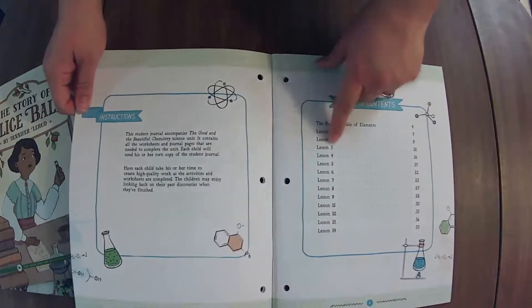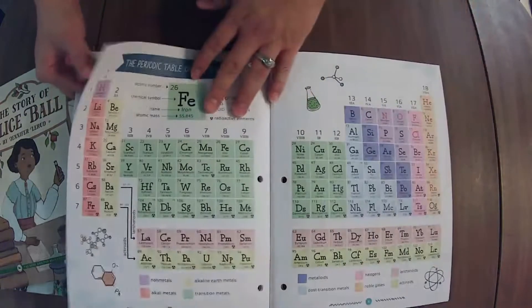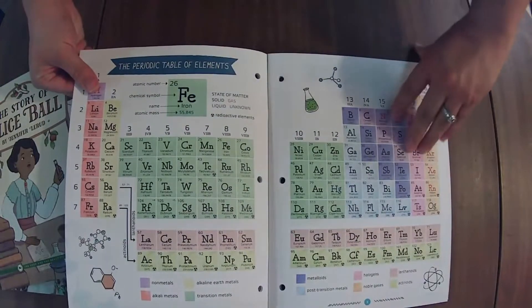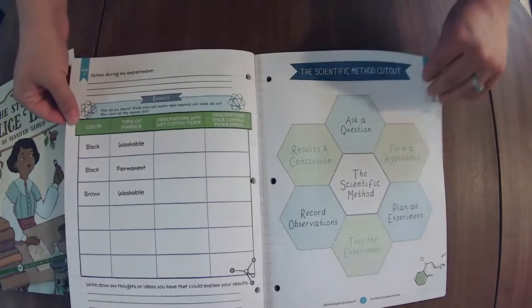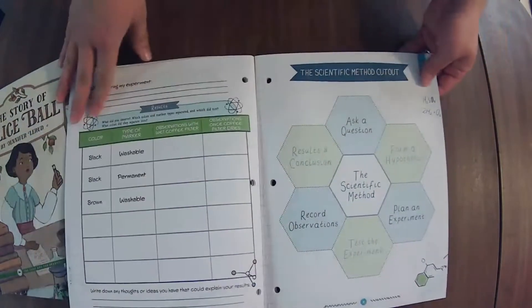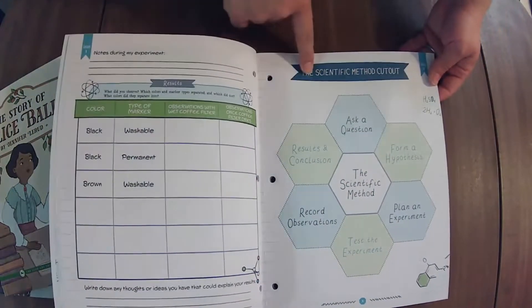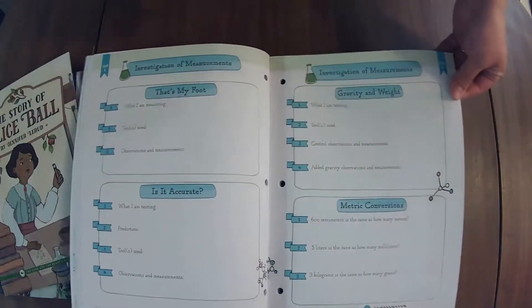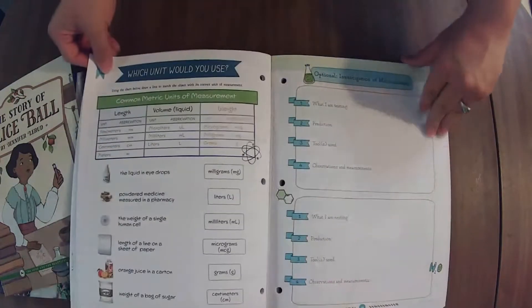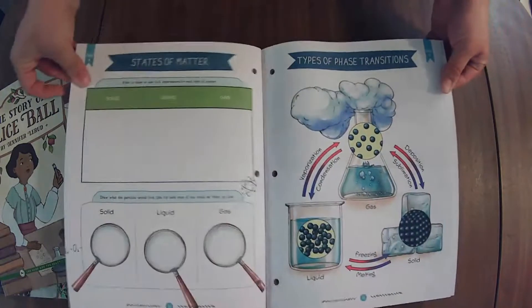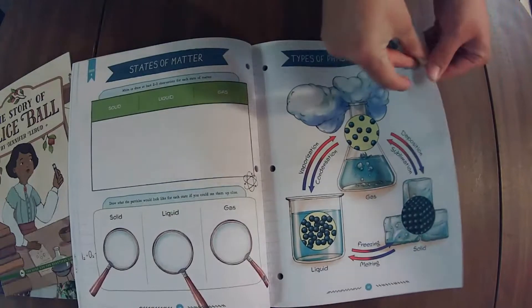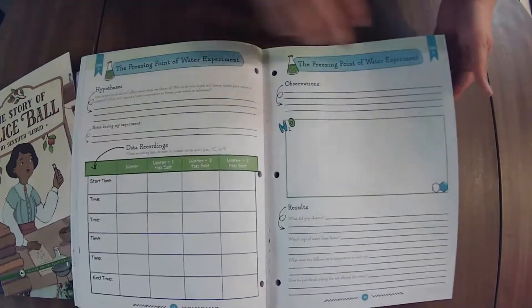All right, let's go through the student journal. So this one has something for every lesson because they have the lesson extensions in here as well. Actually, there's no lesson extension. Lesson one, lesson two. Interesting. We don't have a lesson extension in this for unless it's in the course book. And I just didn't pay attention to that because it is for the older kiddos.